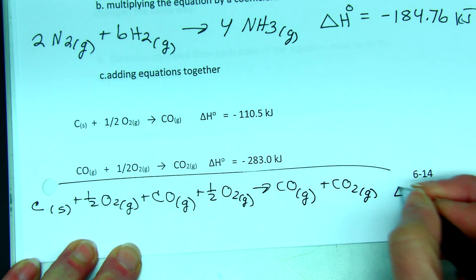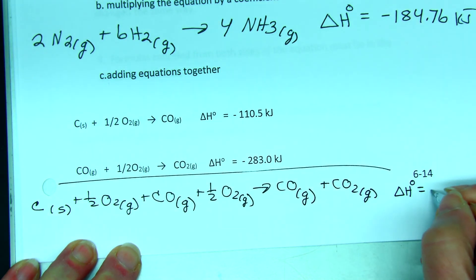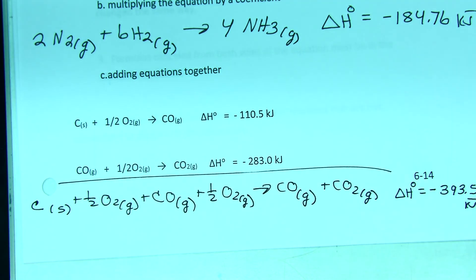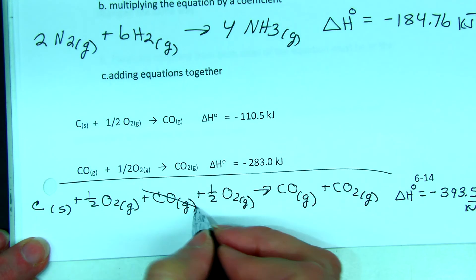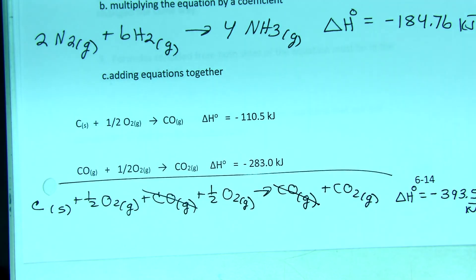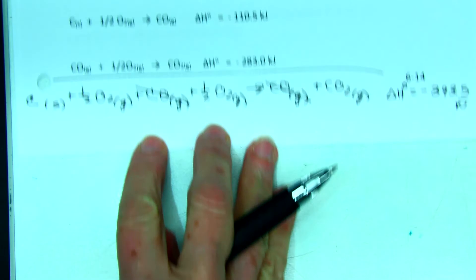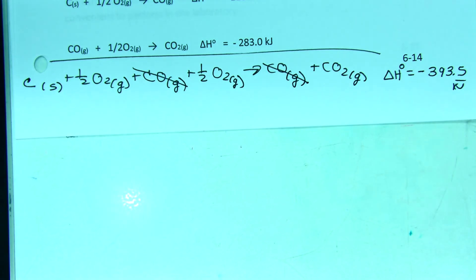And now I add together the enthalpy terms delta H zero is equal to negative 393.5 kilojoules. Now once I've added them together, I see if anything cancels. I have one mole of carbon monoxide gas on each side so I can cancel it.